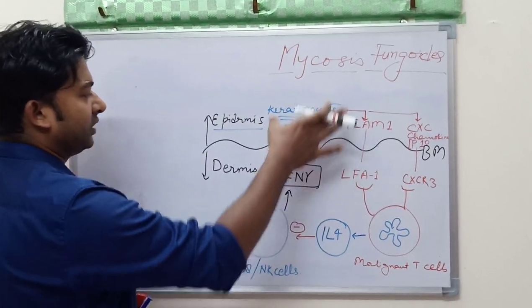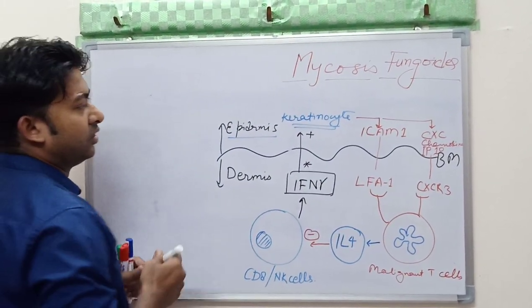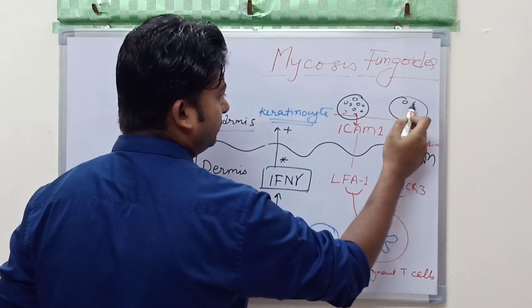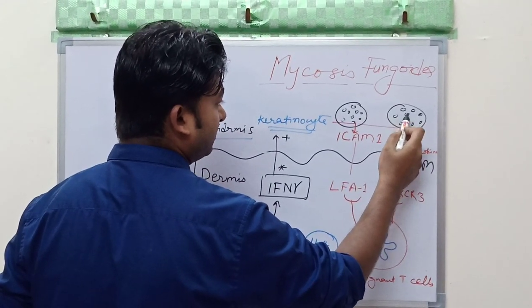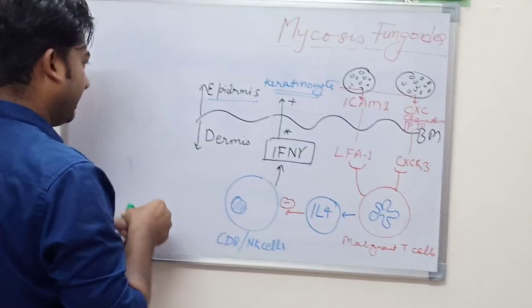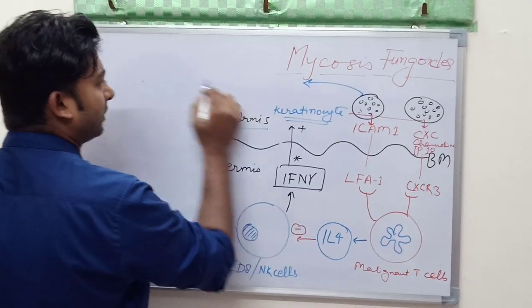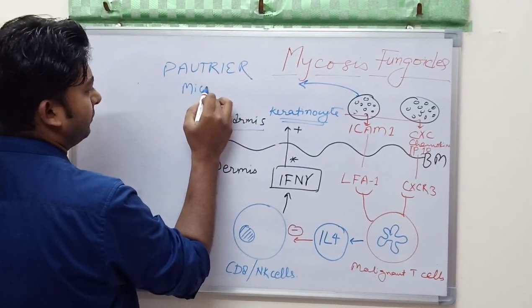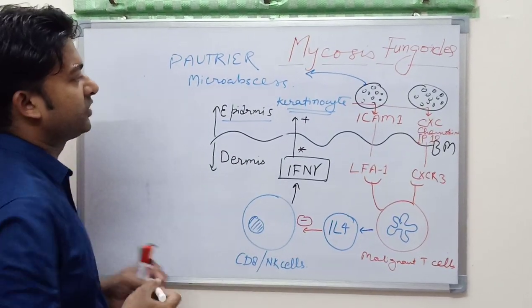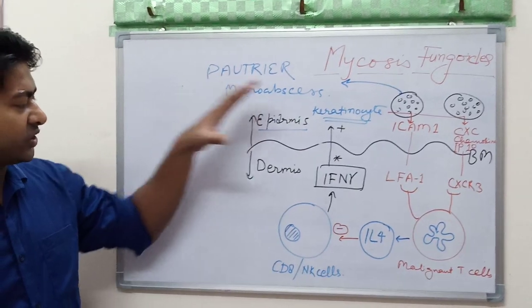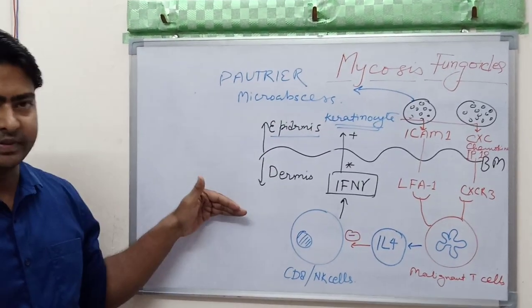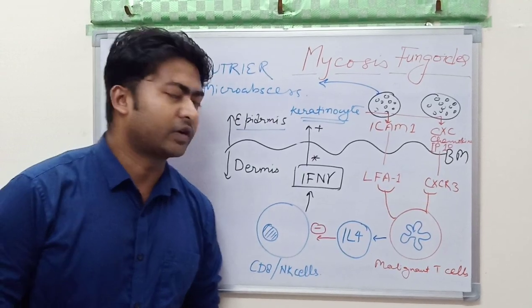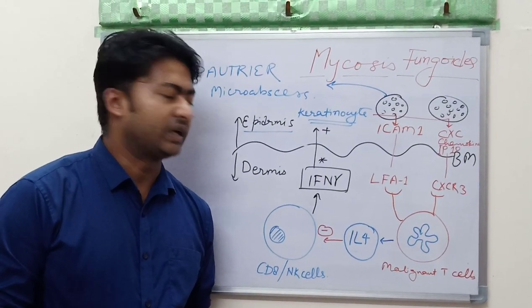As these lymphocytes are going to the epidermis, a characteristic abscess is formed. These cells I am drawing are T cells, atypical cells in the epidermis. There is a particular name for this, it is known as Pautrier microabscess. Pautrier microabscess is basically collection of T cells in the epidermis. We have three stages: patch stage, plaque stage, and tumor stage.